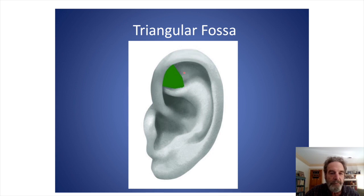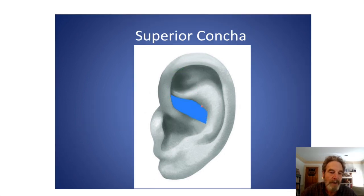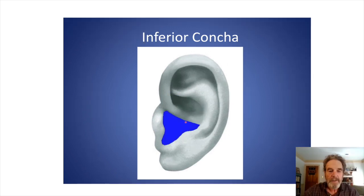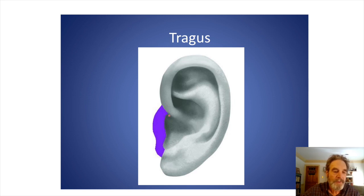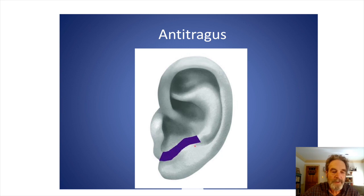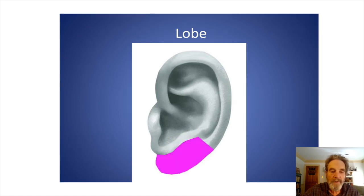The triangular fossa is roughly triangular and contains one of the important points in the auricular trauma protocol. Moving down to the superior concha — like a conch shell, a hollowed-out depression — note the interconchial ridge. Next, the inferior concha, bounded superiorly by the interconchial ridge, anteriorly by the tragus, posteriorly by the antitragus, and inferiorly by the intertragic notch. The tragus is the anterior cartilaginous structure leading into the intertragic notch. The antitragus, opposite the tragus, is an important landmark for finding several points and zones in the ATP. Finally, the lobe, where the brain and central nervous system structures are generally found in their representation on the ear.